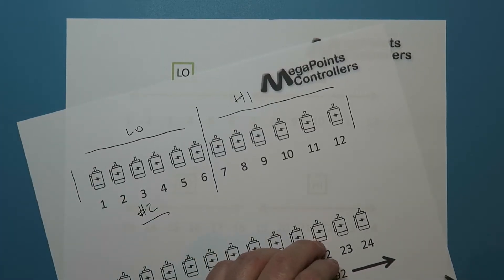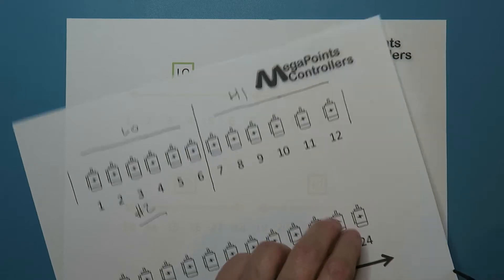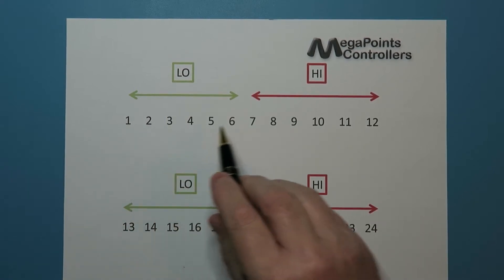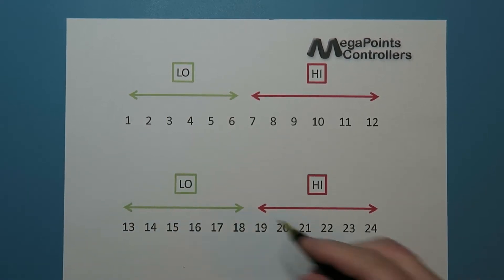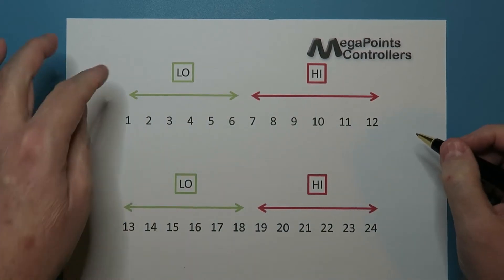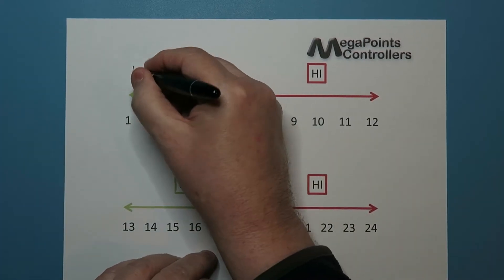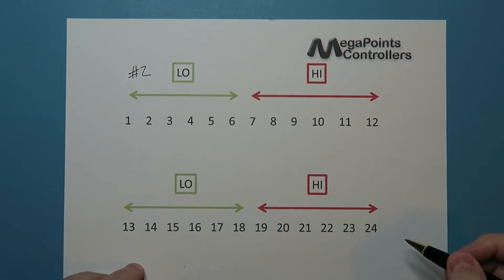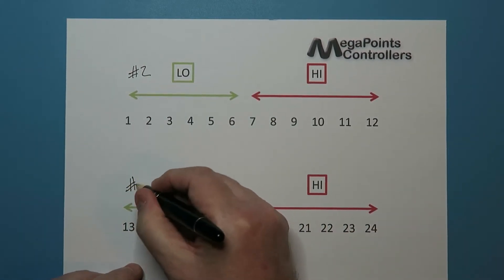So on this little diagram here, you can see I've taken the first 24 addresses for the first 24 devices and I've split them into the low and the high. So the first one would be address 2 and the second range of 12 would be address 3.